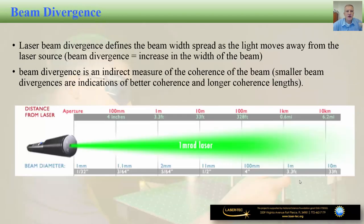The next important parameter is beam divergence. The laser beam coming out of the laser has a certain cross-section and spreads out as it moves away from the laser aperture. Beam divergence defines the beam width spread as light moves away from the laser source — it means the increase in width of the beam. Beam divergence is actually an indirect measure of coherence: smaller beam divergences indicate better coherence and longer coherence lengths. In the picture on this slide, moving from left to right, we can see the beam width spreading out. This specific laser has a beam divergence of about 1 milli-radian.